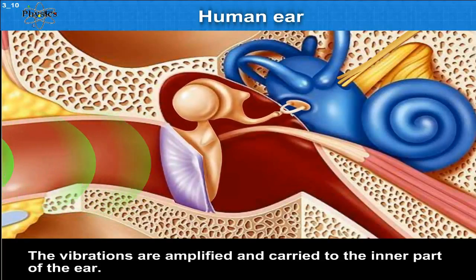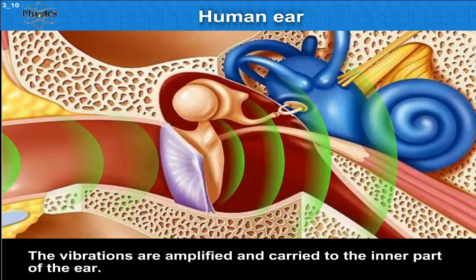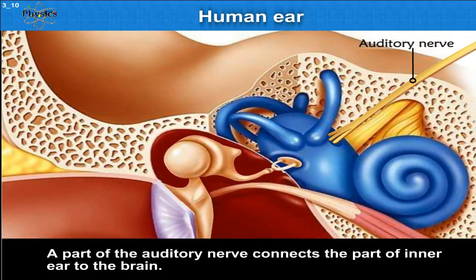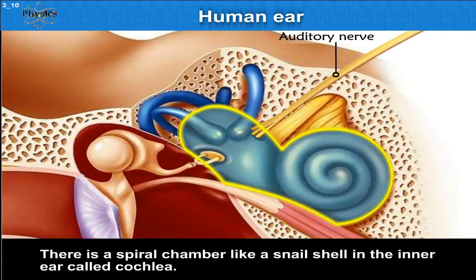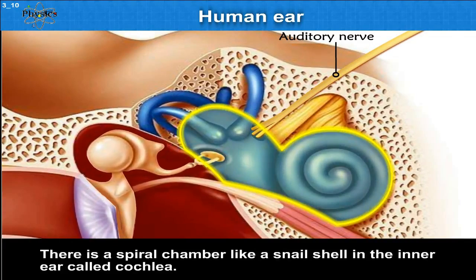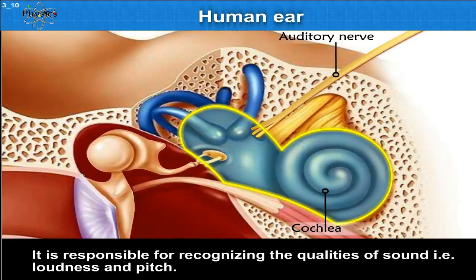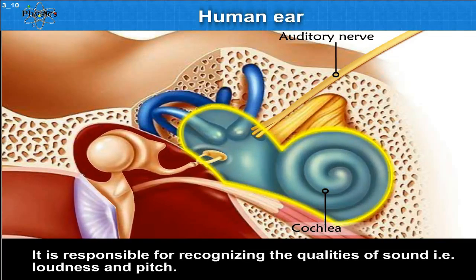The vibrations are amplified and carried to the inner part of the ear. A part of the auditory nerve connects the inner ear to the brain. There is a spiral chamber like a snail shell in the inner ear called the cochlea. It is responsible for recognizing the qualities of sound, that is loudness and pitch.